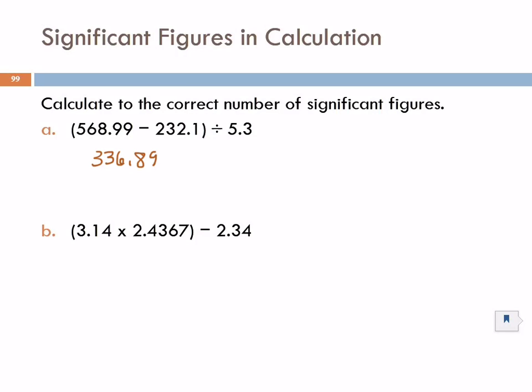What's the rule for adding and subtracting? The fewest number of decimal places, right? So here we have two decimal places. Here we have one decimal place. So this result has one decimal place is the last significant figure.